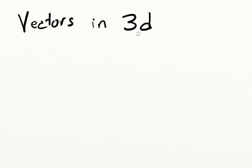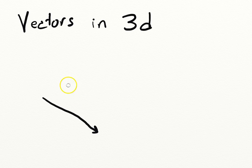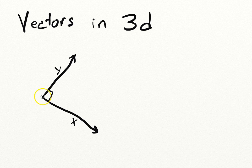Last lecture we talked about vectors in two dimensions. This time we're going to be looking at vectors in three dimensions. Let me start off by drawing a simple set of basis vectors in two dimensions — I've got the x-axis and the y-axis at right angles to one another. Now imagine the z-axis coming out, perpendicular to both x and y.